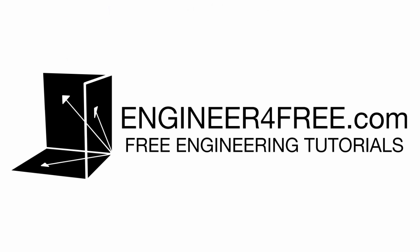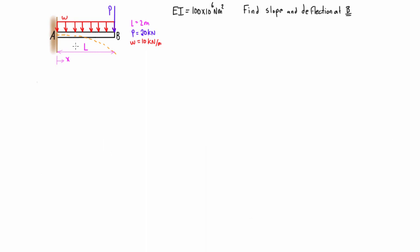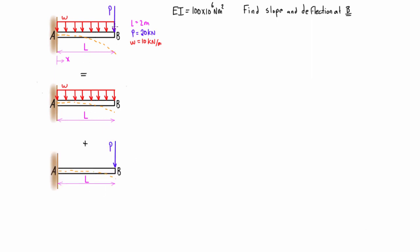Welcome back. In this video we're looking at example number two for the method of superposition. We've got a cantilever beam with two different loads: a distributed load at 10 kilonewtons per meter and a point load acting on the end of 20 kilonewtons. The deflection of the beam subjected to both loads is equal to the sum of the deflections caused by each load individually.